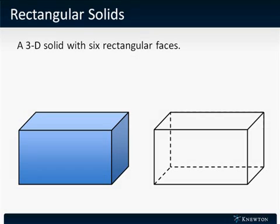A rectangular solid is a three-dimensional solid with six rectangular faces, as shown here. On the left we see a typical rectangular solid, and on the right a transparent one, where we can see the backsides of the solid with the dotted lines.